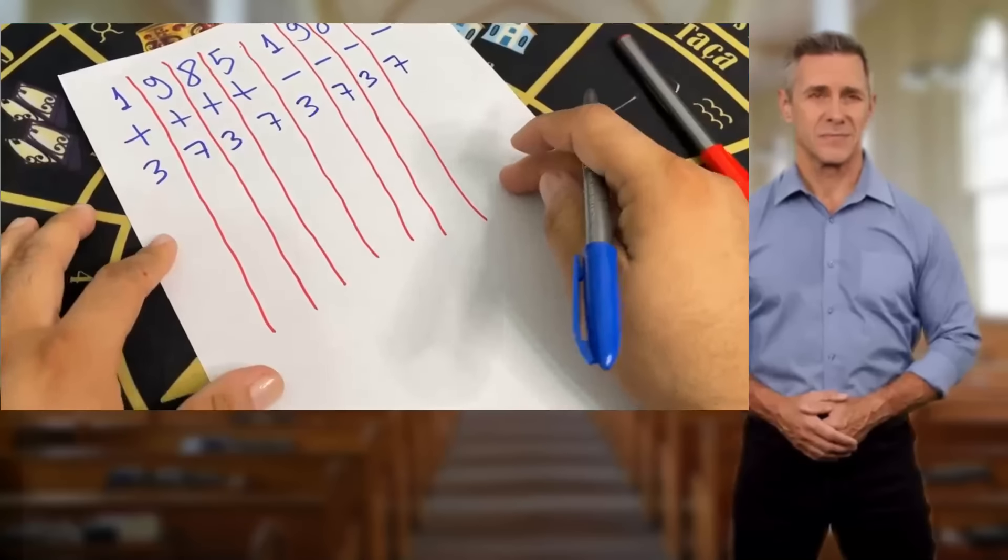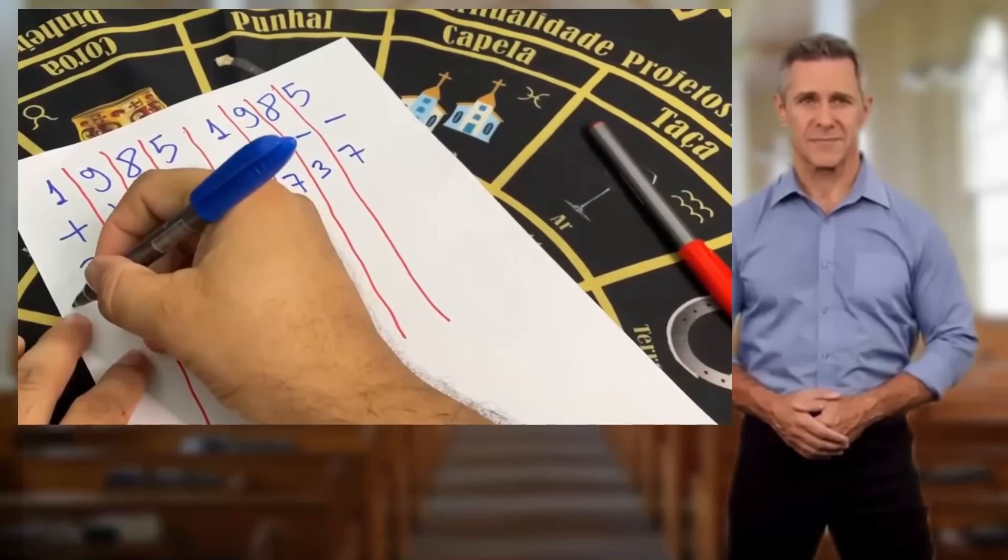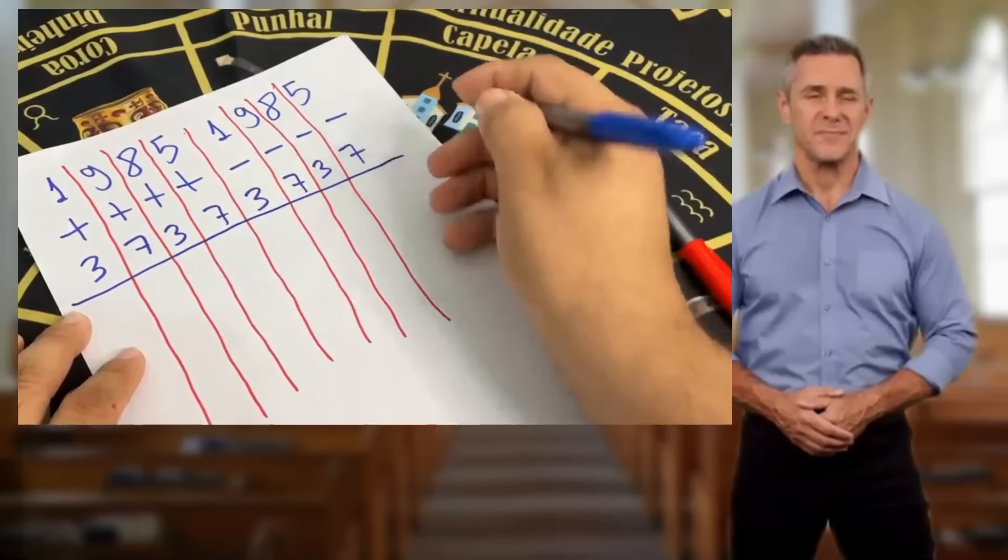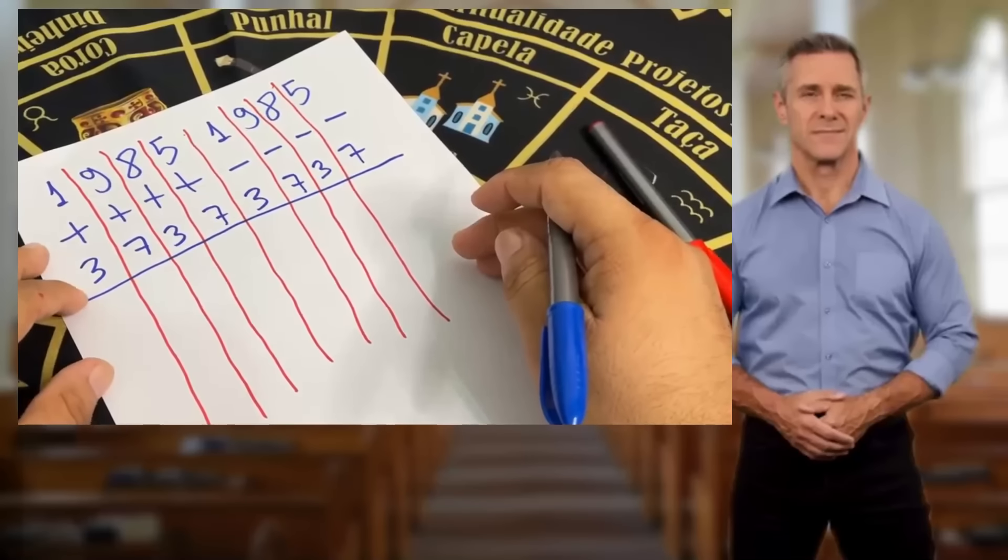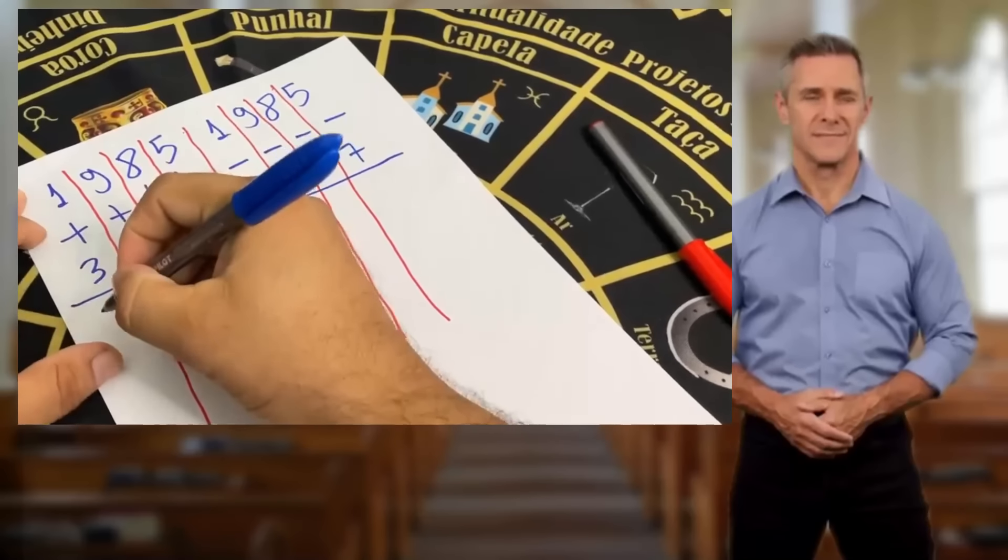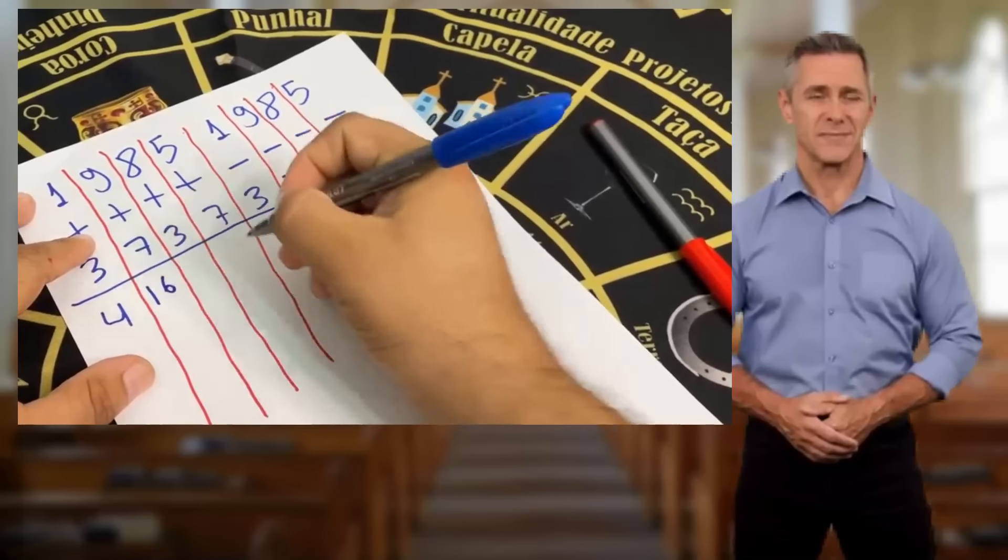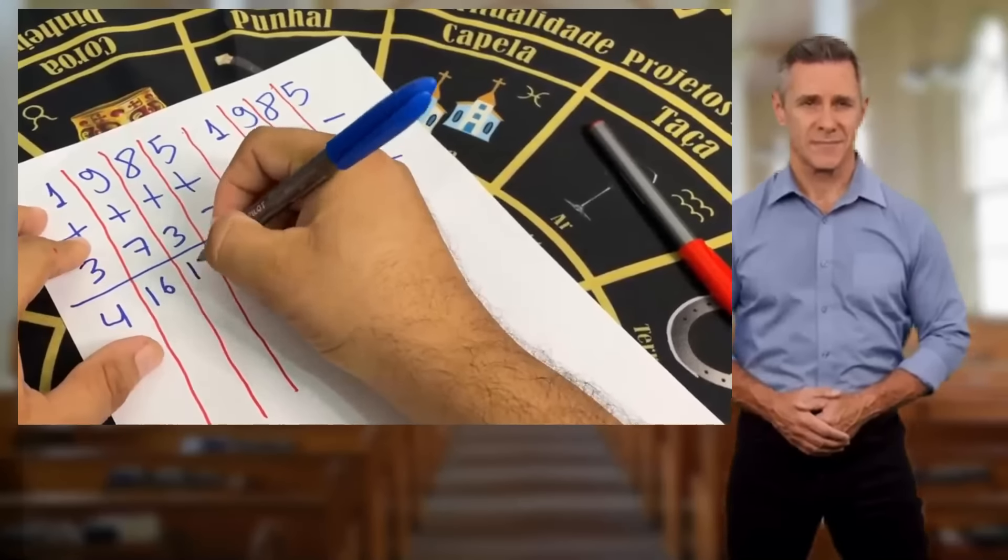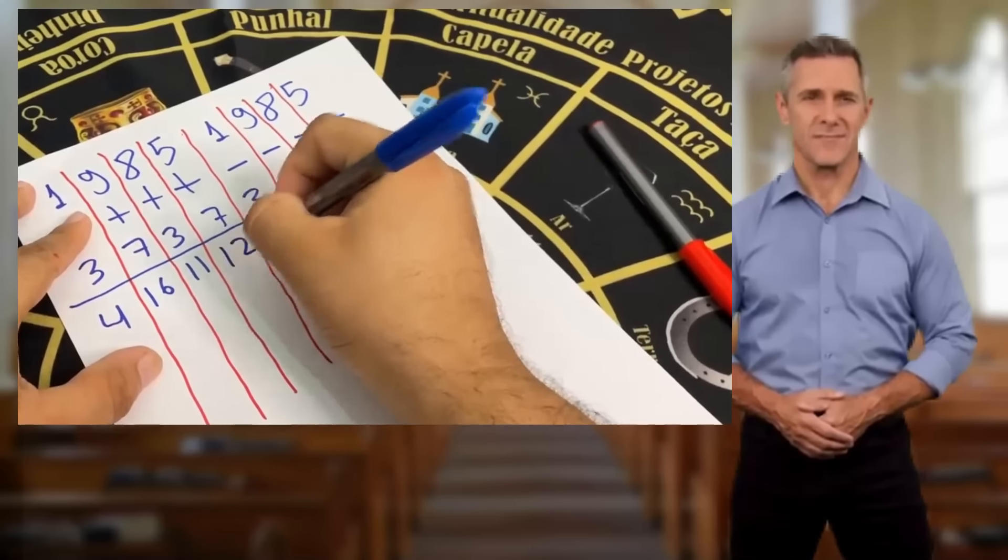Alright, now we'll draw a line under the age and we'll start doing the calculation. The first calculation is to add the numbers. We'll take the numbers normally. For example, 3 plus 1 is 4. 9 plus 7 is 16. 8 plus 3 is 11. 5 plus 7 is 12.